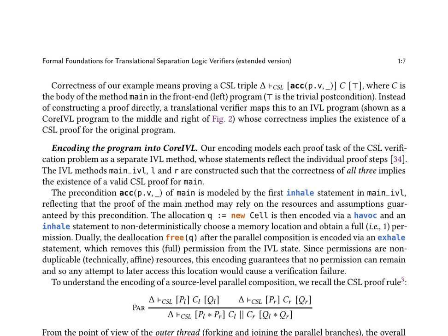The encoding process involves modeling each proof task of the CSL verification problem as a separate IVL method. The IVL methods main_IVL and lander are constructed such that the correctness of all three implies the existence of a valid CSL proof for main. The precondition ACC(page, V) of main is modeled by the first inhale statement in main_IVL, reflecting that the proof of the main method may rely on the resources and assumptions guaranteed by this precondition. The allocation Q := new cell is encoded via havoc and an inhale statement to non-deterministically choose a memory location and obtain a full, i.e., one, permission.